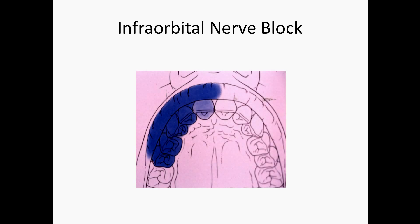Next, I want to discuss the infraorbital nerve block. The infraorbital nerve provides innervation to the maxillary teeth, except for the molars. In addition, it also provides innervation to the skin of the upper lip, the skin of the nose, and the lower eyelid.